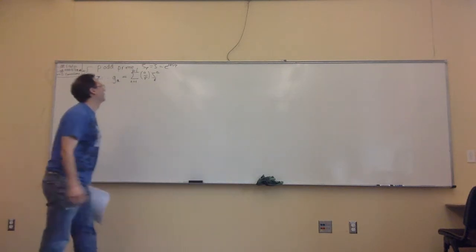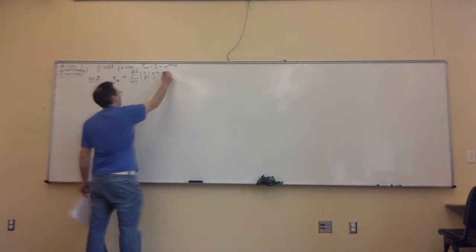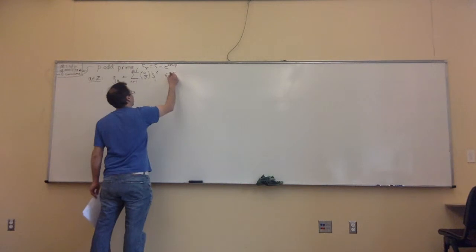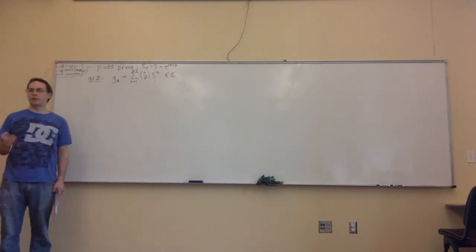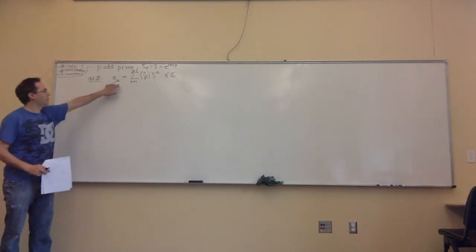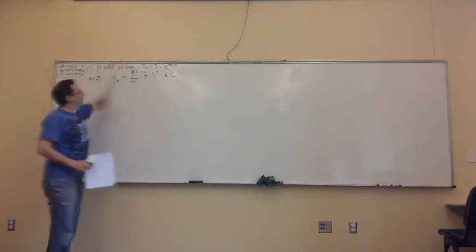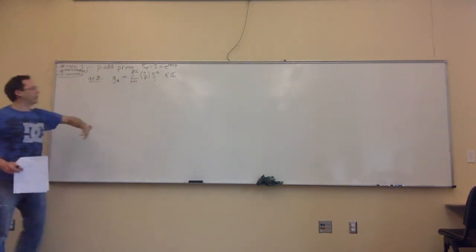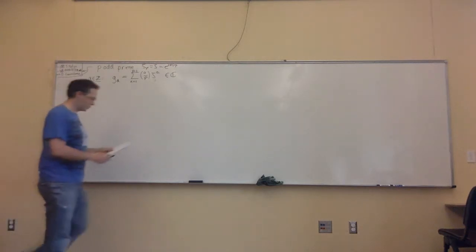So zeta is cosine of 2 pi over P plus I sine of 2 pi over P. This is a complex number. Then I made several statements — a couple of propositions, propositions 0, 1, and 2 — about this sum, and I didn't prove any of them. What I plan to do right now is completely prove them.